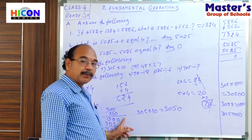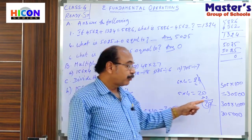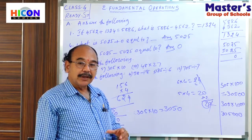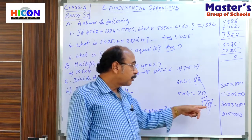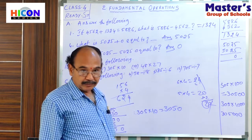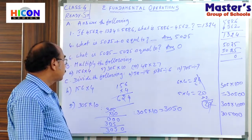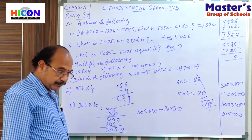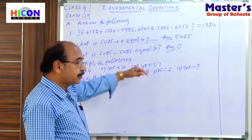This is the actual multiplication, and also without actual multiplication, just by observing the number of zeros, we can multiply very easily. Okay students, now come to the 7th one.